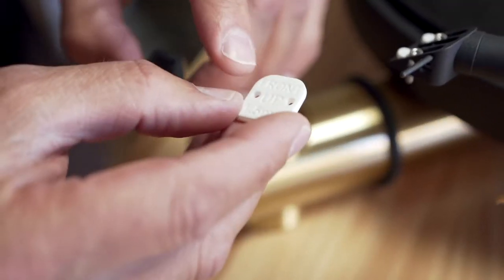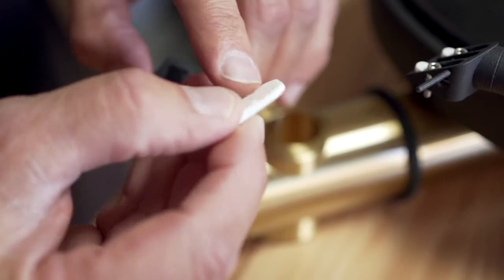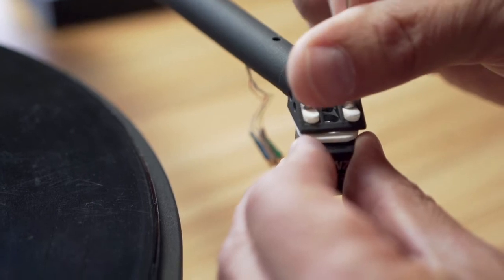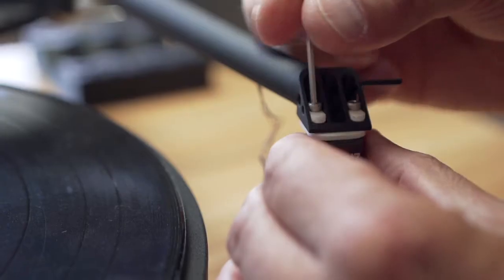So now we install the cartridge with the shim properly oriented between the cartridge and the head shell. There is an up and a down and, of course, rounded goes up front.